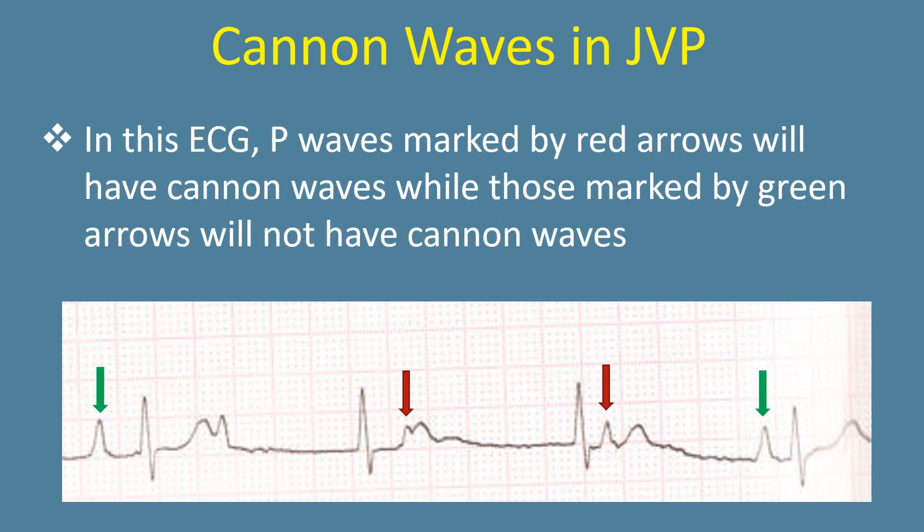In this ECG, P waves marked by red arrows will have cannon waves, while those marked by green arrows will not have cannon waves.